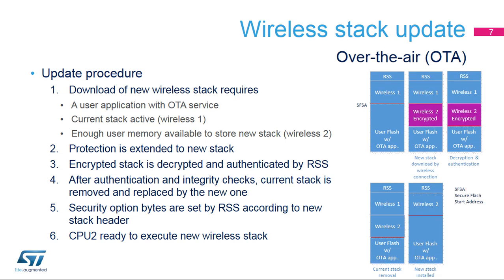This slide presents the over-the-air procedure for updating the wireless stack. This procedure requires a wireless application from the user side, able to provide a download service to a remote client. On request from this client, the user application downloads the new wireless stack to the device's flash memory. Then, it sends a message to the RSS to start the update procedure. The encrypted and signed new wireless stack is downloaded in the flash memory before being decrypted and authenticated. After all checks have been passed, the current stack is removed and replaced by the new one.